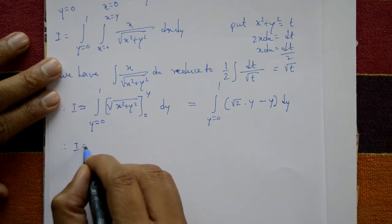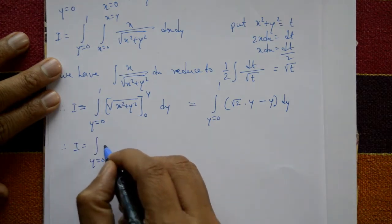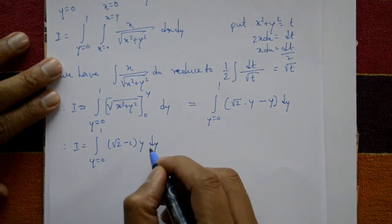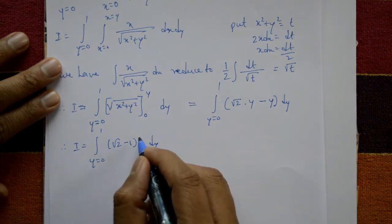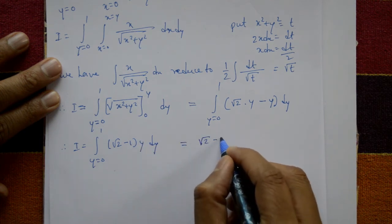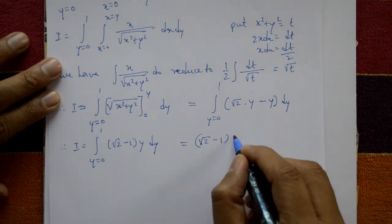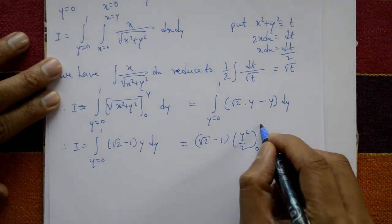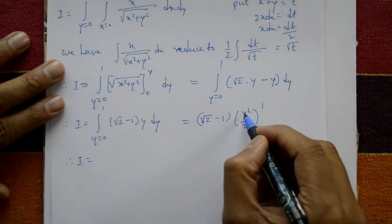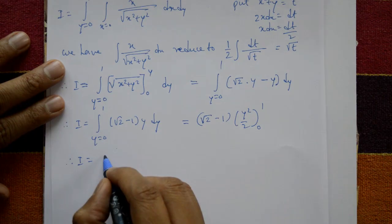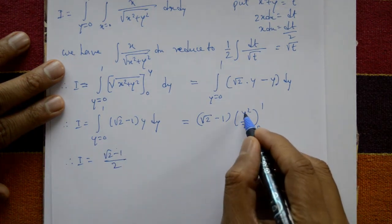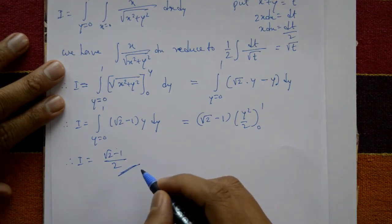Taking y as common: I equals integration of y from 0 to 1 of (√2 − 1)·y dy. Since (√2 − 1) is constant, integrate y to get y²/2, with limits 0 to 1. Therefore I equals (√2 − 1) · [y²/2] from 0 to 1 = (√2 − 1) · (1/2) − 0 = (√2 − 1)/2. This is the required solution.